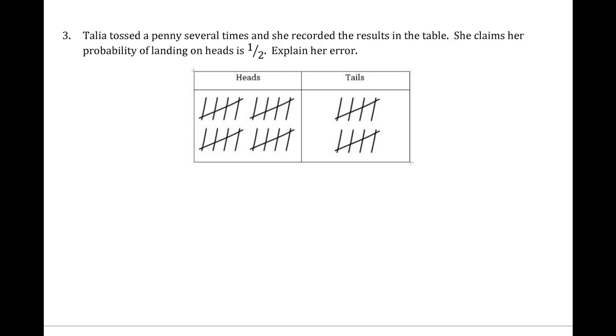Well, theoretically, when you flip a penny, you have a fifty percent chance of landing on heads and a fifty percent chance of landing on tails. But based on Talia's experiment, she landed on heads twenty times and tails ten. This is a total of thirty.